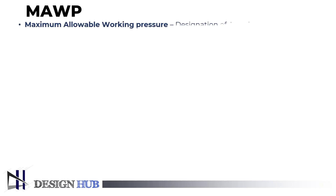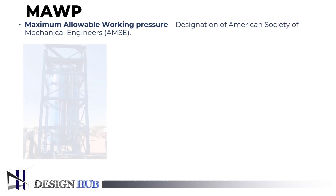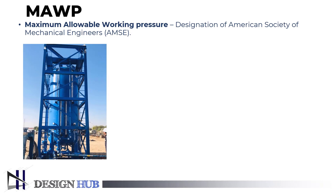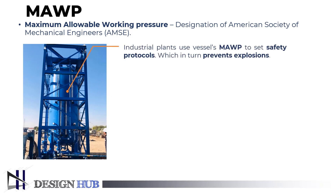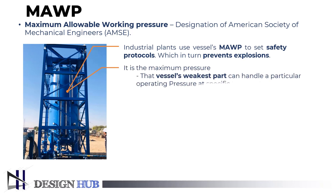Maximum allowable working pressure is a designation of the American Society of Mechanical Engineers and specifies the rating of the pressure release component of a vessel. Industrial plants use the vessel's maximum allowable working pressure to set safety protocols by ensuring that the system does not exceed its safe operating pressures, which in turn prevents explosions. It measures the maximum pressure the vessel's weakest part can handle at a particular operating temperature.